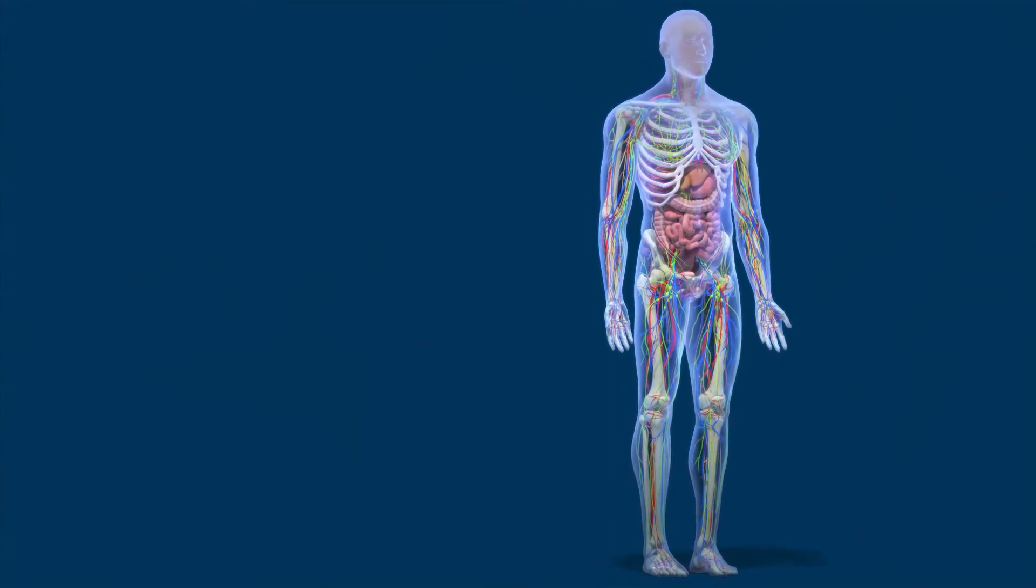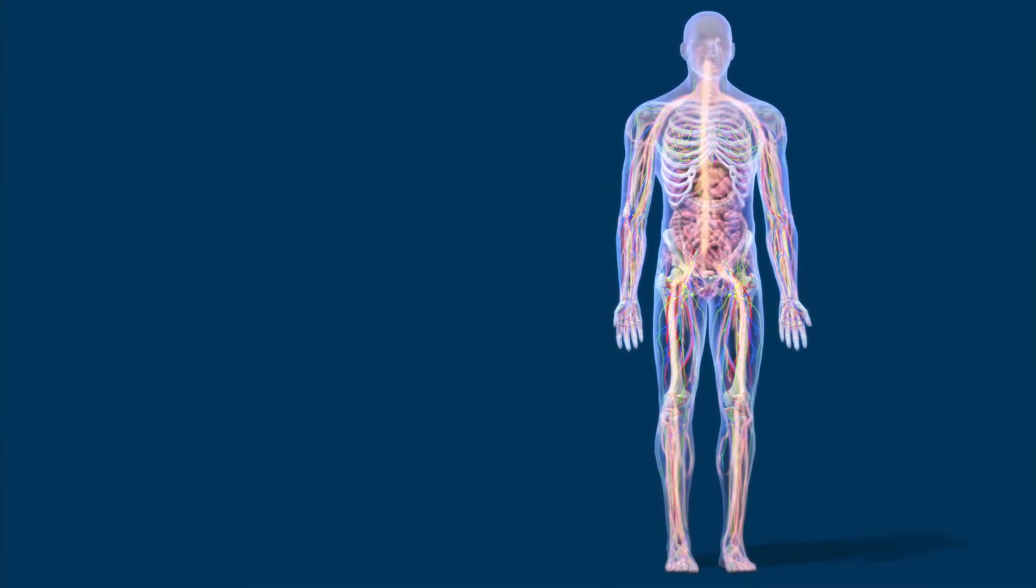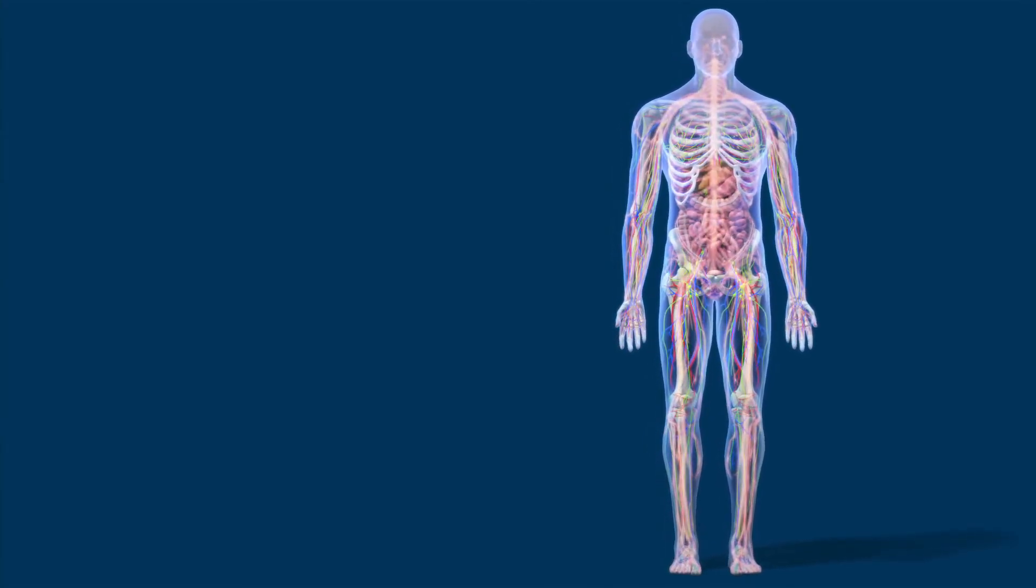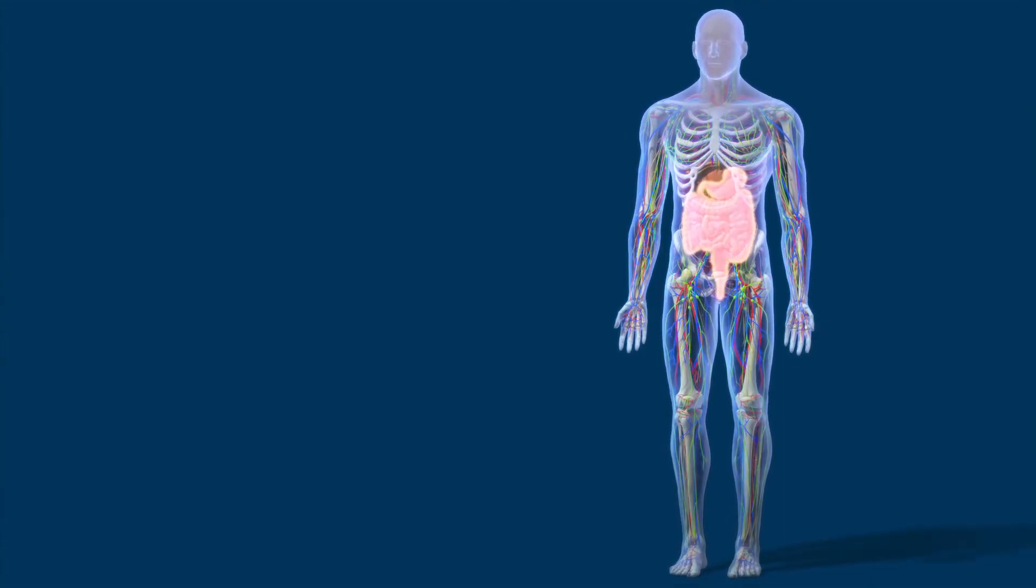TTR amyloid deposits are most commonly found in the heart, where they cause cardiomyopathy, and in the nervous system, where they cause neuropathy. Deposits can also be found in the digestive system and kidneys.